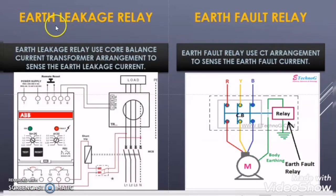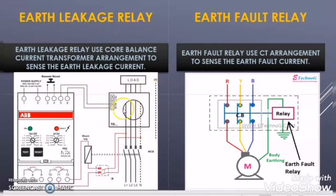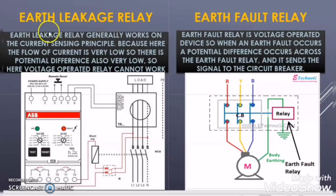Another difference is that both the earth leakage relay and the earth fault relay use a CBCT — core balance current transformer — in order to sense their respective currents.